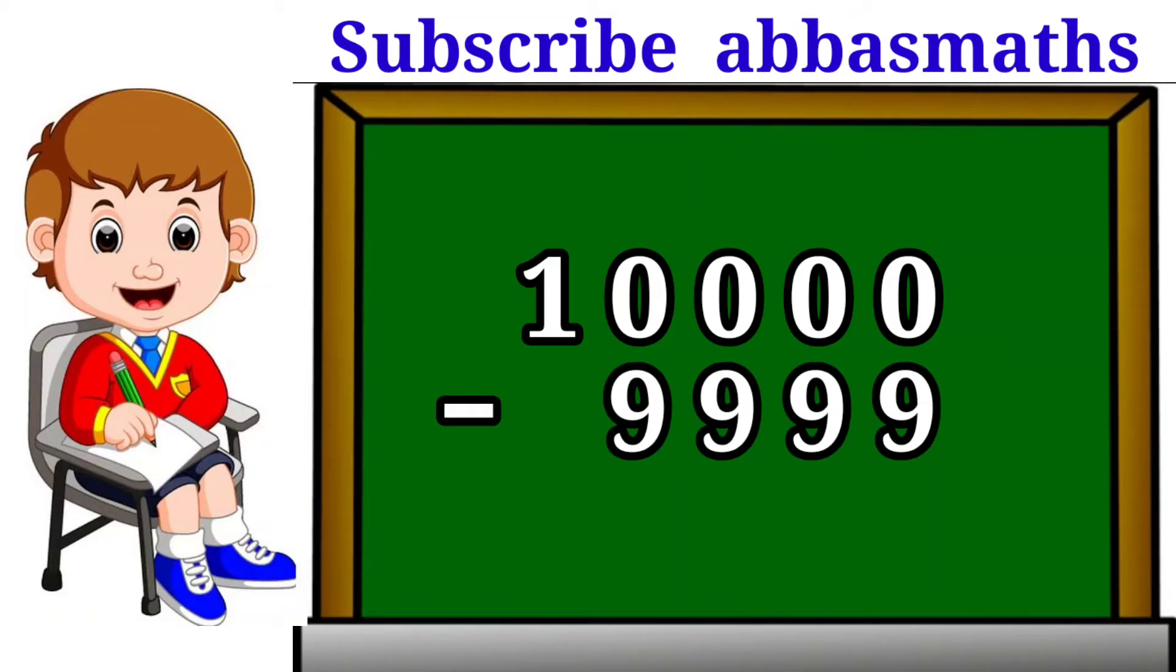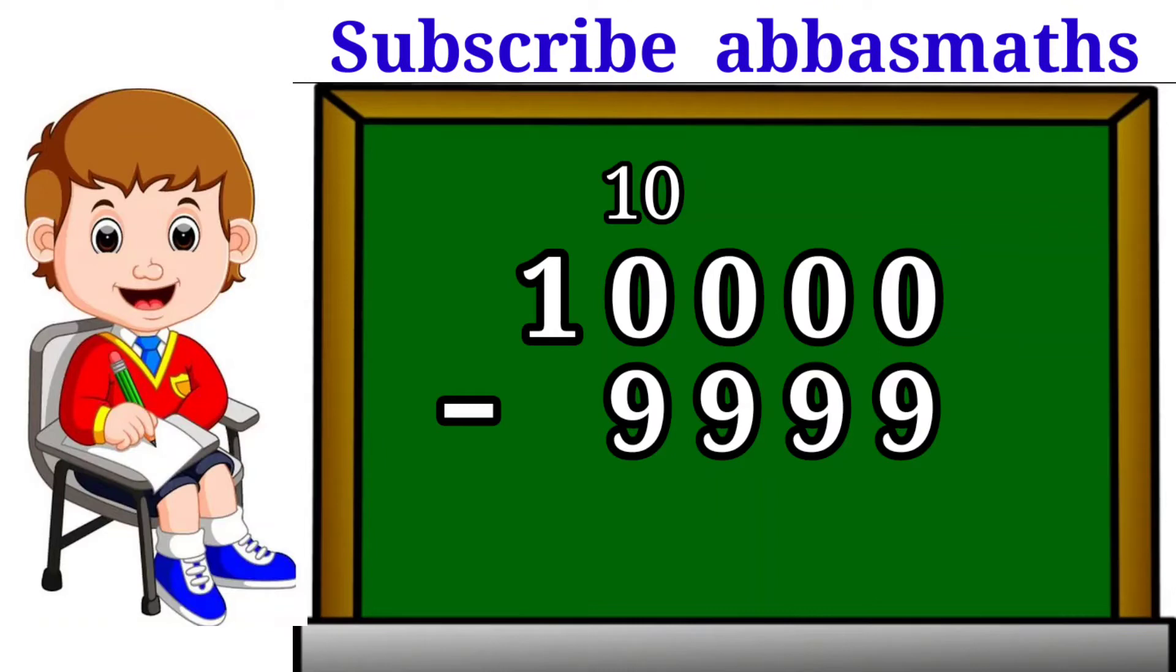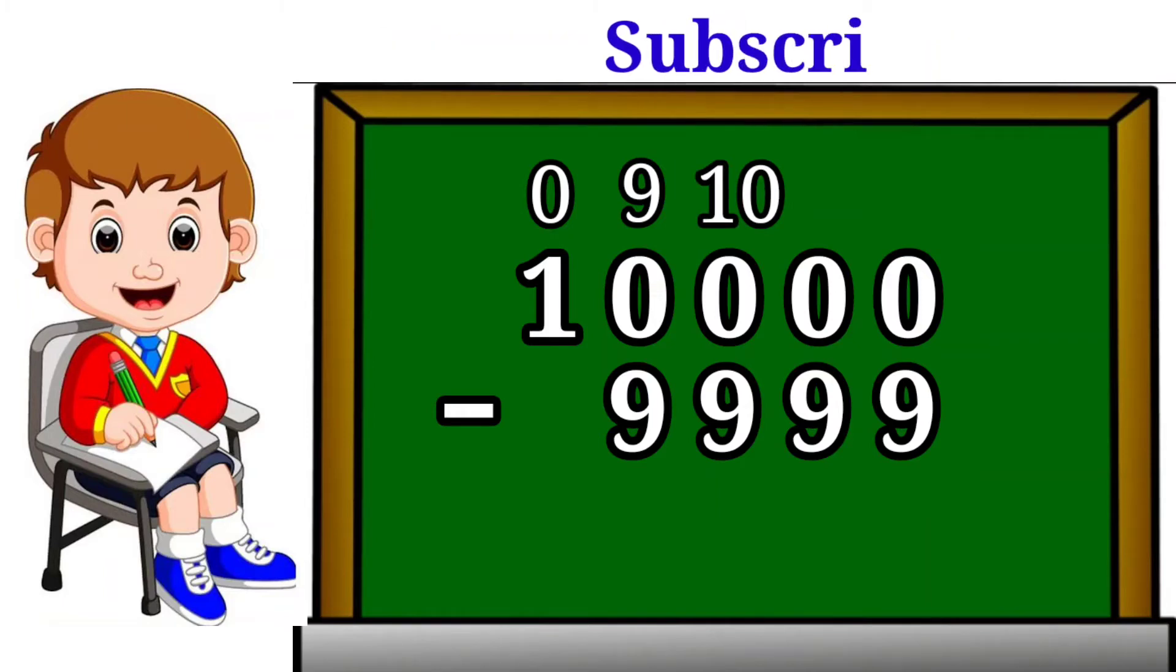Now we carry 1 towards right and it becomes 10. Now we carry 1 from 10 towards right. After carrying, this 10 becomes equal to 9 and 1 carried towards right becomes 10.